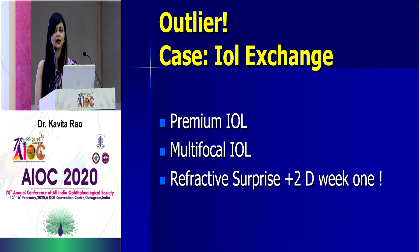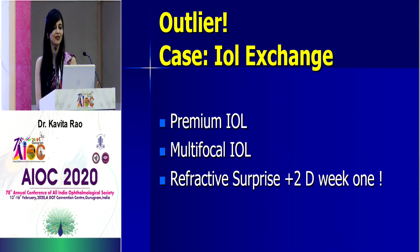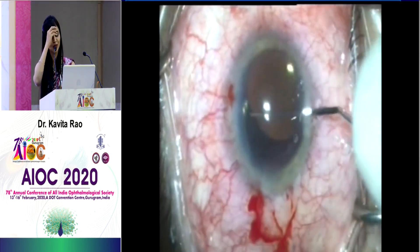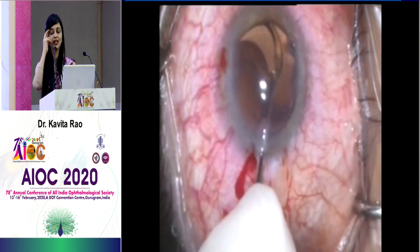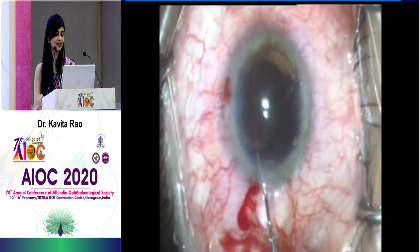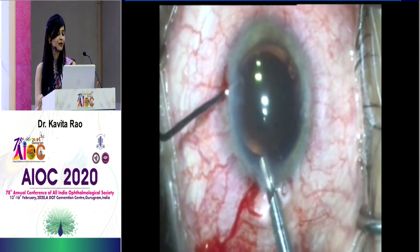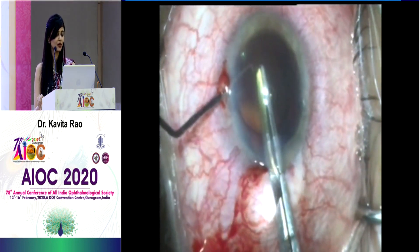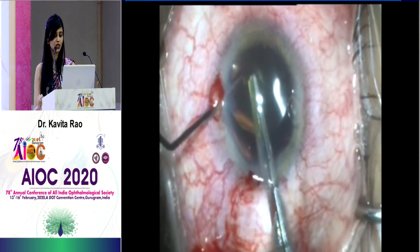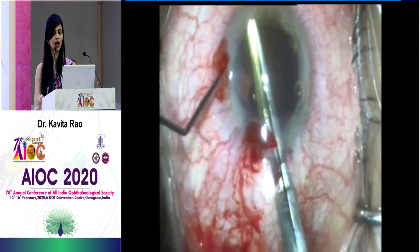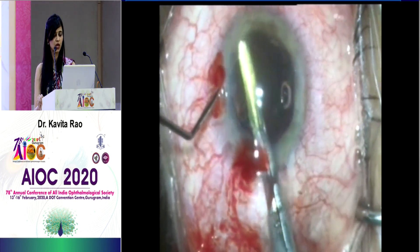The last case is a complete outlier. This was a patient with a premium multifocal IOL and a refractive surprise of plus two diopters at week one — a very VIP patient. For IOL exchange there are special IOL cutting scissors. Make sure you're not using them more than two or three times as they become blunt — we tried that and the IOL keeps twisting inside the eye. Make sure you adequately expand the wound, around 3mm here, and the patient did well.